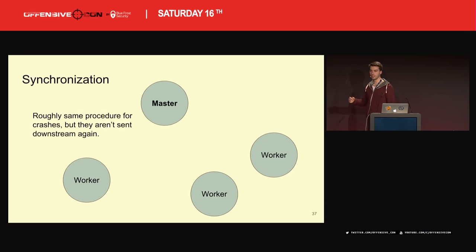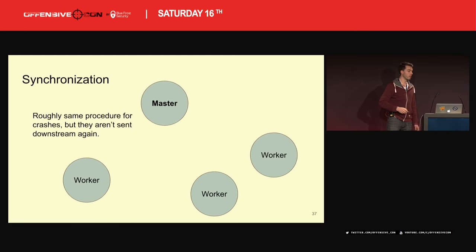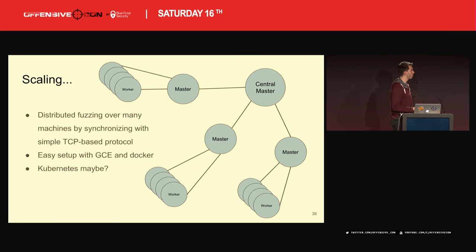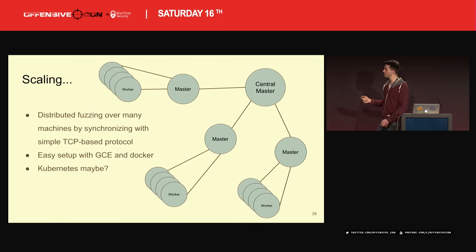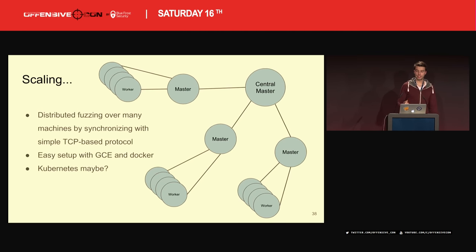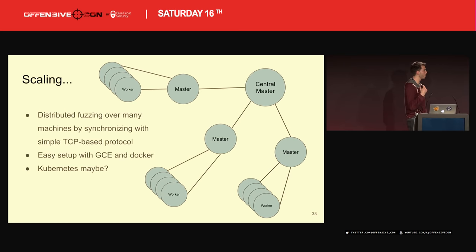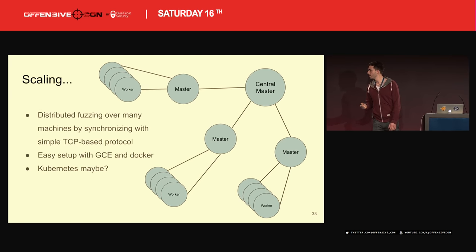The same happens for crashes, but crashes are only sent upstream — not back to workers. For scaling, the potential problem is if there are way too many workers for one master: since the master has to execute all the interesting samples, it might get completely overloaded. So I have intermediate masters and then a central one which collects all the crashes. Synchronization works over a very simple TCP protocol, and the whole thing is easy to set up with Google Cloud Engine and Docker — just make a Docker container for one instance, write scripts to start 100 instances or whatever, and synchronize them. Kubernetes might be a nice thing to try.